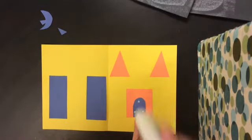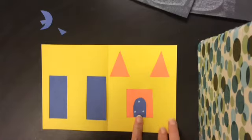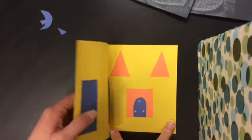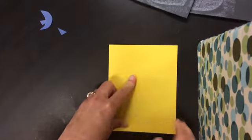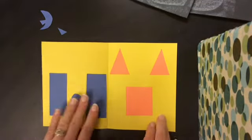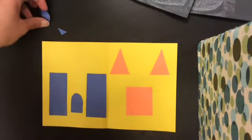I want it to get glued over here in between the towers. So I put the glue on top, close it, and it goes over there. You can't tell it's a castle, can you?